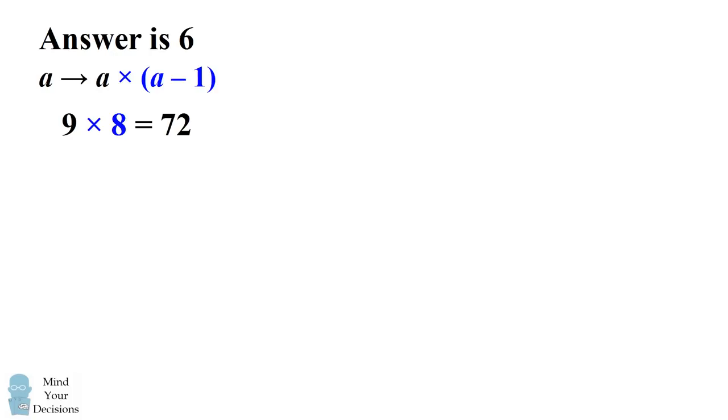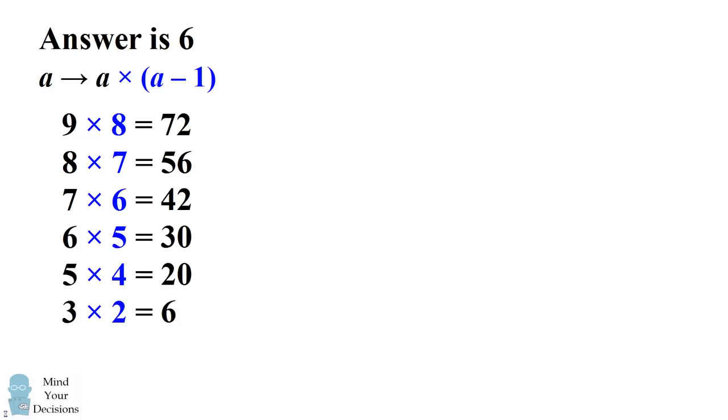The next line would be 8 times 7 which equals 56. We then have 7 times 6 which equals 42, 6 times 5 which equals 30, 5 times 4 which equals 20, and finally we would have 3 times 2 which equals 6.